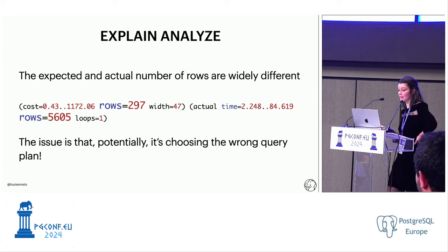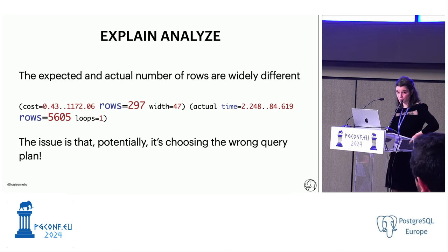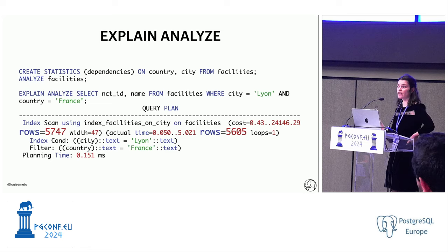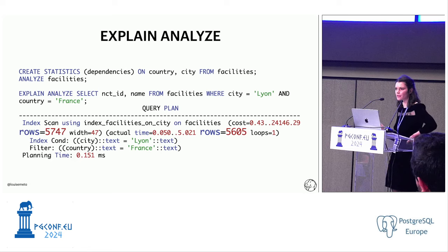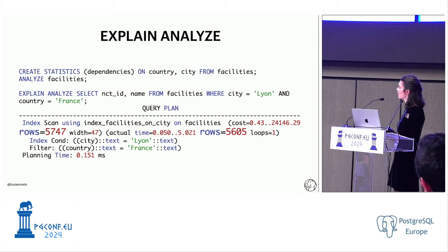Here's what you can do: tell Postgres that those two columns are related. You run CREATE STATISTICS with type 'dependency' on country and city from the facilities table, then ANALYZE that table. After this, the estimated number of rows is much closer to the actual number.